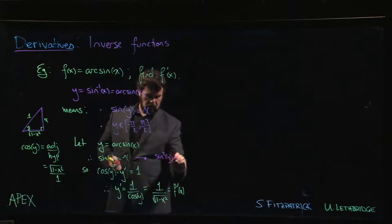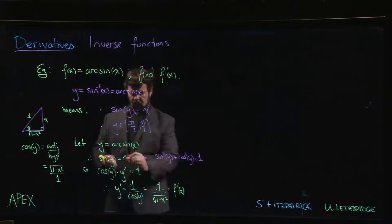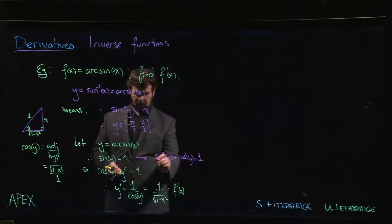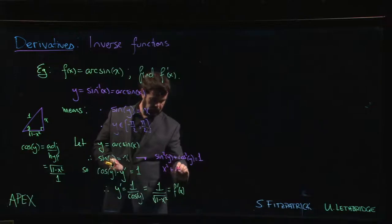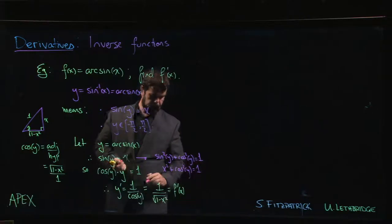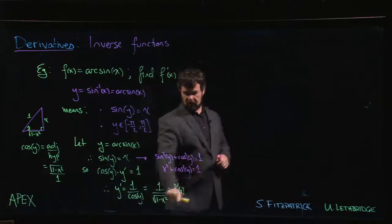Well the other thing we can do is we would say, suppose sine of y is equal to x. We know that sine squared y plus cosine squared y is equal to one. We know that sine y is x, so sine squared - that's just sine y squared - that's just x squared. So x squared plus cosine squared y equals one.